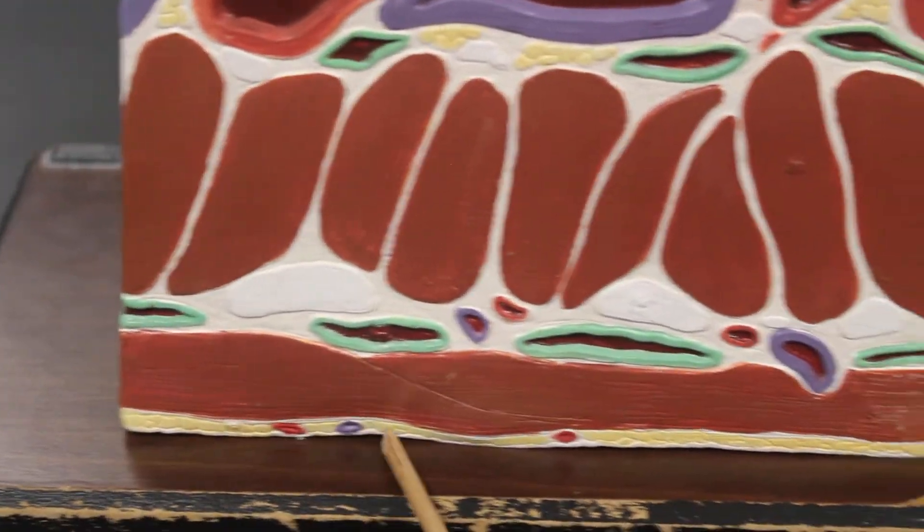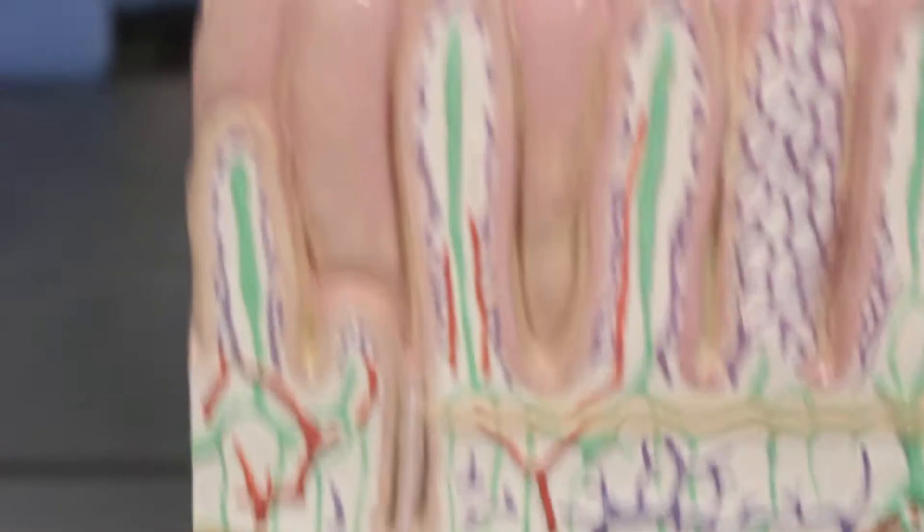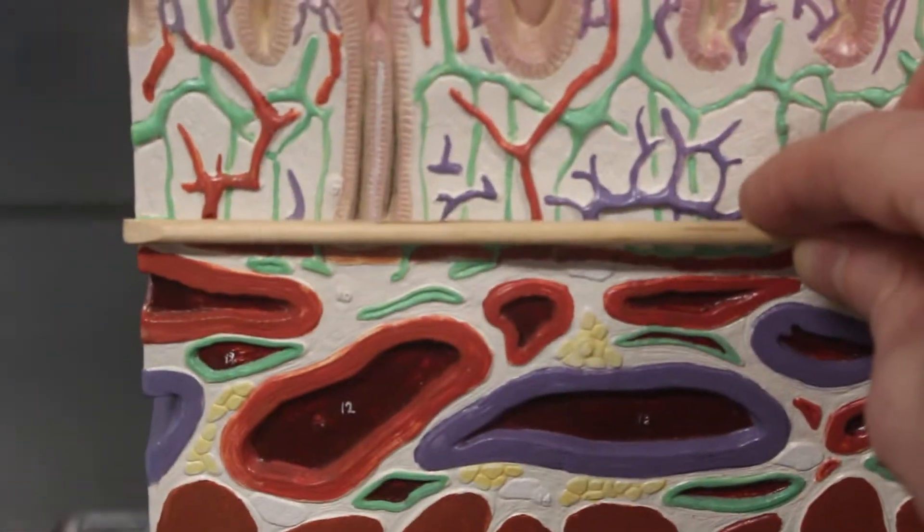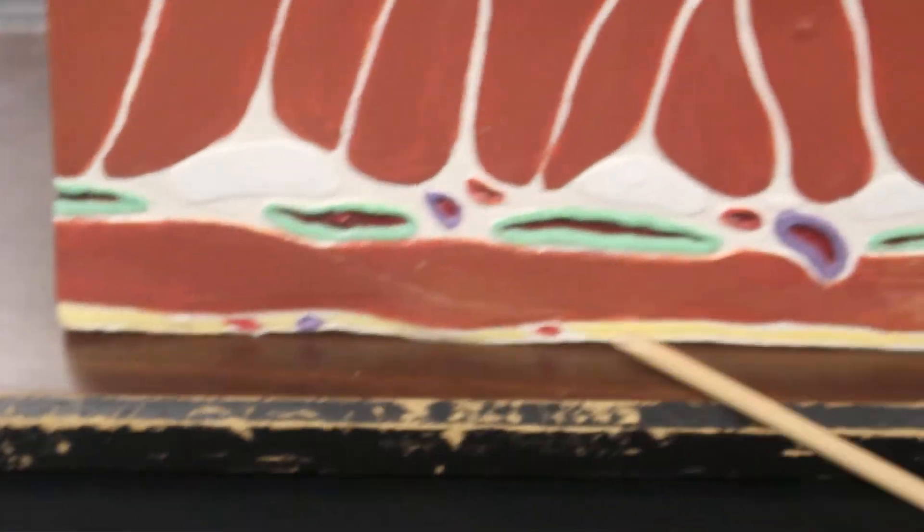And at the very bottom is the serosa layer. So four layers: mucosal layer, submucosal layer, muscularis, and serosa.